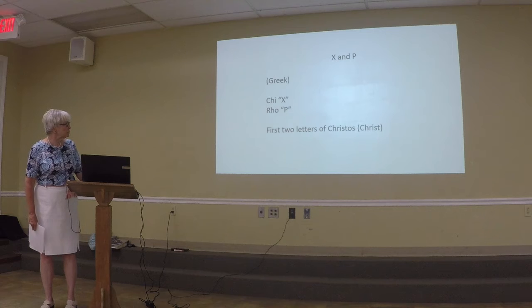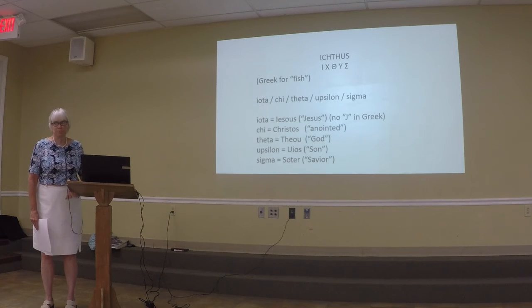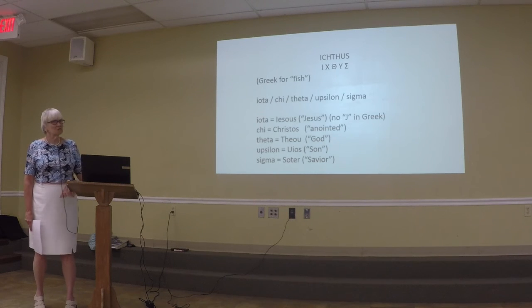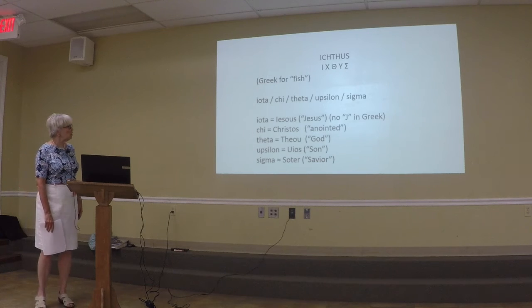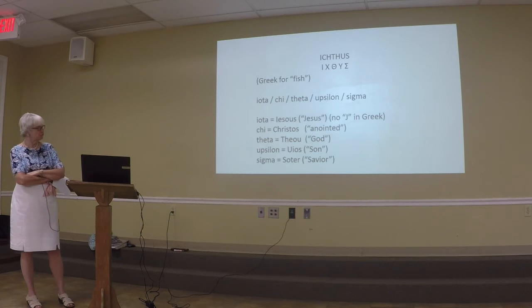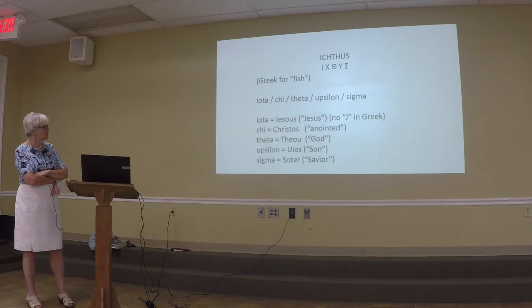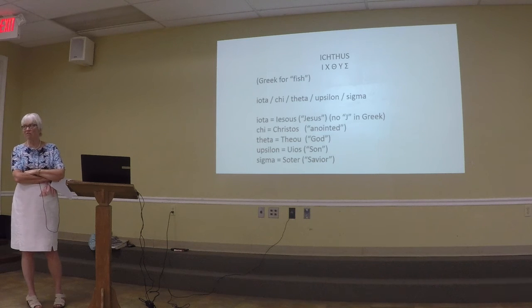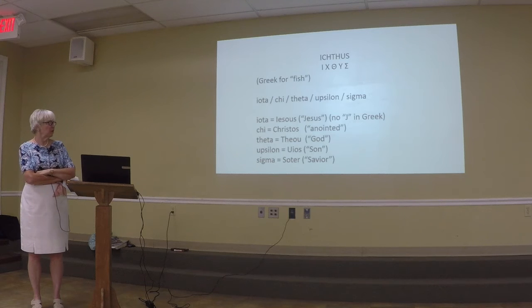The X and the P — X is the Greek Chi, P is the Greek Rho — the first two letters of Christos. The fish: Ichthous is the Greek word for fish, and the letters that make up Ichthous become an anagram — Iota means Jesus, Chi means Christos, Theta means God, Upsilon is the first letter of Son, Sigma means Savior. Jesus, anointed, God, Son, Savior. So the fish, although it's a really easy symbol to put on your wall and other people might think you just like salmon, in a Christian's home it becomes part of a secret language.